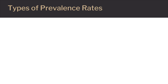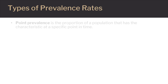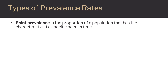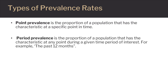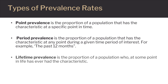There are three classifications of prevalence. Point prevalence is the proportion of a population that has the characteristic at a specific point in time, on a specific day or date. Period prevalence is the proportion of a population that has the characteristic at any point during a given time period of interest, for example within the past 12 months of a calendar year. Lifetime prevalence is the proportion of a population who, at some point in life, have ever had the disease or morbidity.